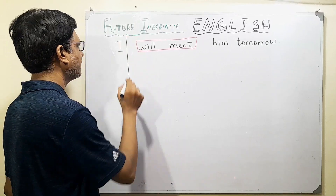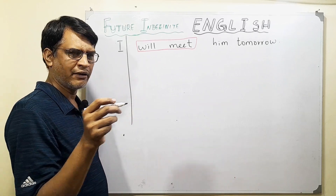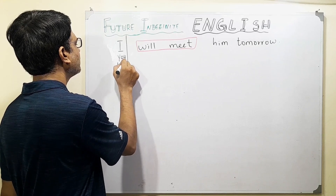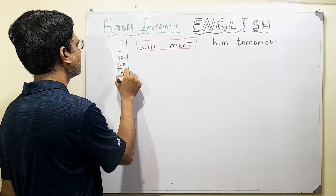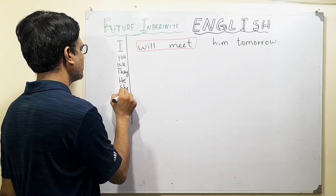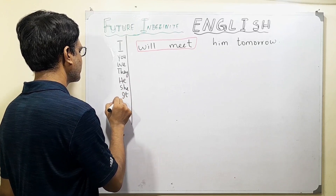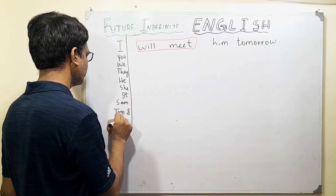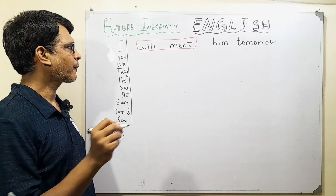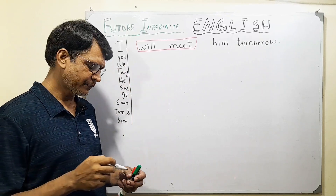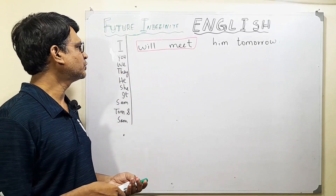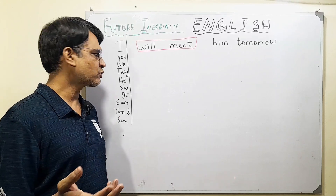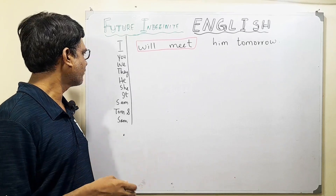Interestingly, this is also a simple thing. Because whatever the subject we have — I, you, we, they, he, she, it, one person like Sam, or two people like Tom and Sam — in any case, the structure will be the same. I will meet him tomorrow. You will meet him tomorrow. We will meet him tomorrow. They will meet him tomorrow. He will meet him tomorrow. She will meet him tomorrow. Tom and Sam will meet him tomorrow.